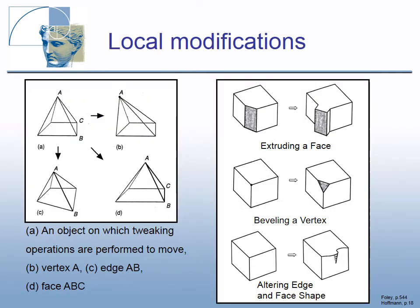Local modifications of a BREP solid include tweaking, extruding a face, beveling a vertex, and altering edge or face shape. The tweaking operation changes the shape by moving vertex A (image B), edge AB (image C), or face ABC. The right image illustrates extruding a face, beveling a vertex, and altering edge or face shape.